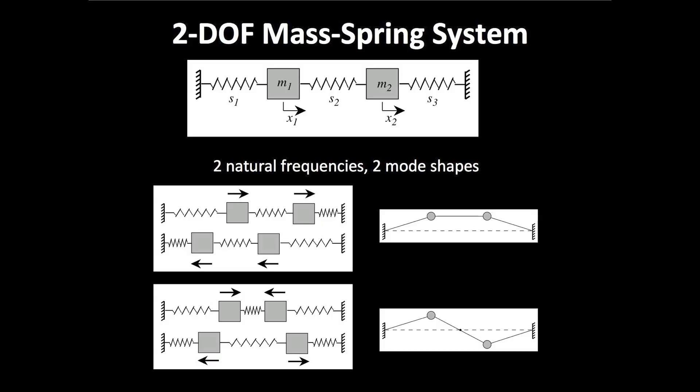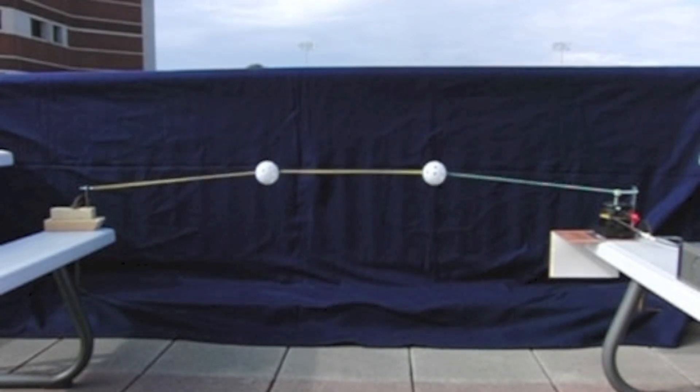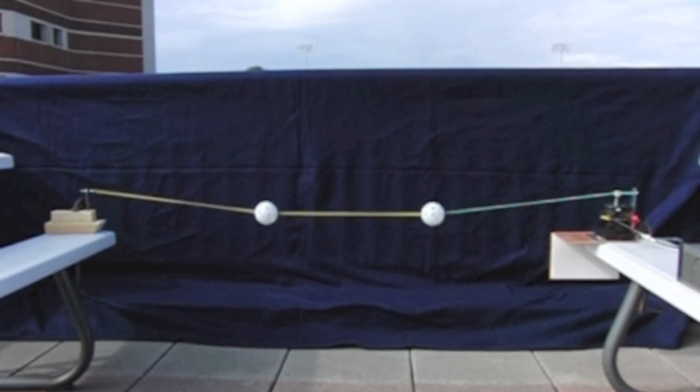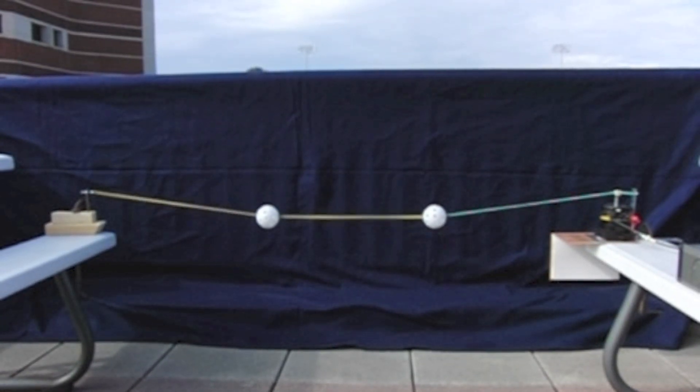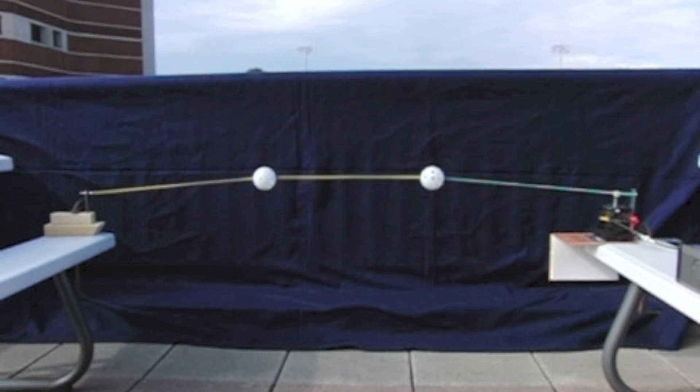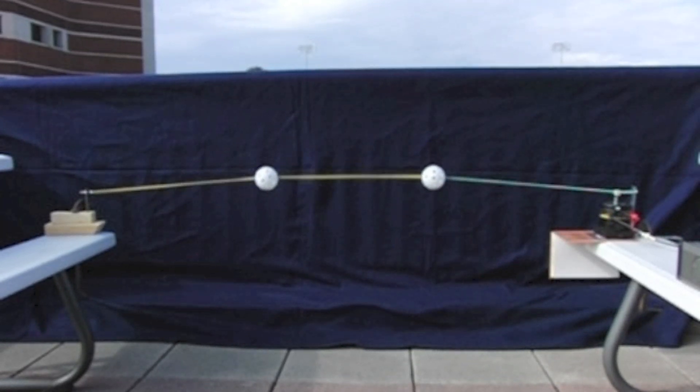A two degree of freedom mass-spring system has two natural frequencies and two mode shapes. In the first mode shape, the first frequency, the two masses move in the same direction at the same time, basically looking like a one degree of freedom oscillator.